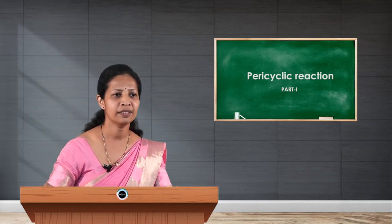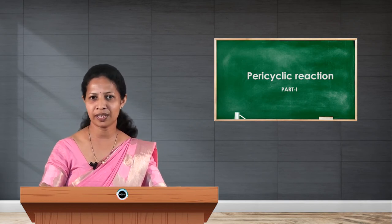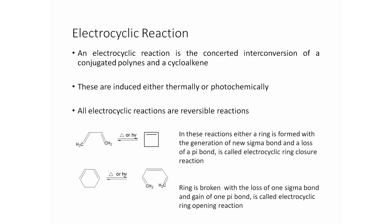One example of an electrocyclic reaction is 1,3-butadiene undergoing cyclization to give cyclobutene. Another example is 1,3,5-hexatriene undergoing cyclization to give cyclohexadiene. Both reactions take place under thermal as well as photochemical conditions, but the stereochemistry of the products formed are different.